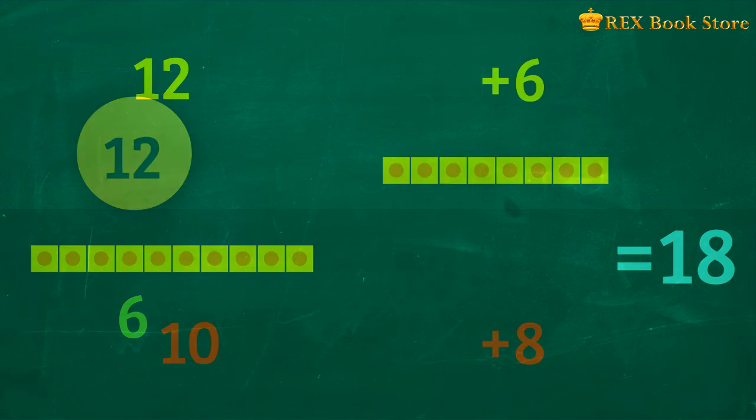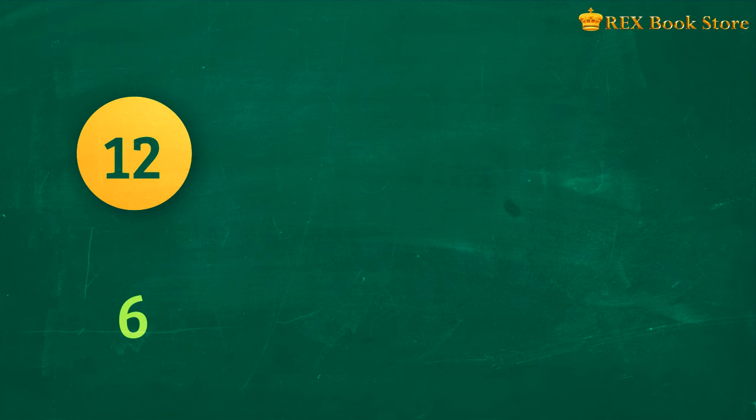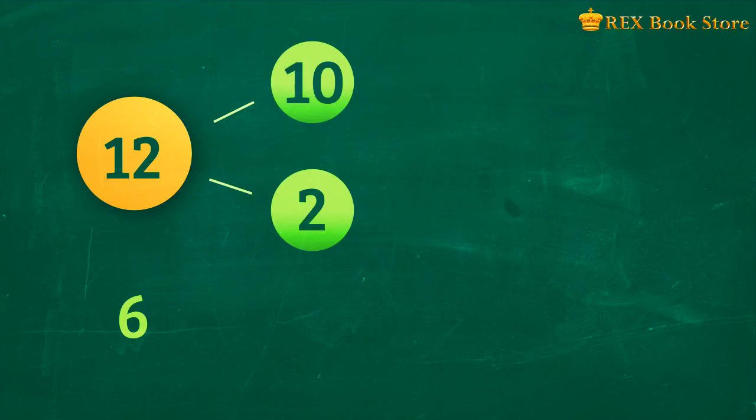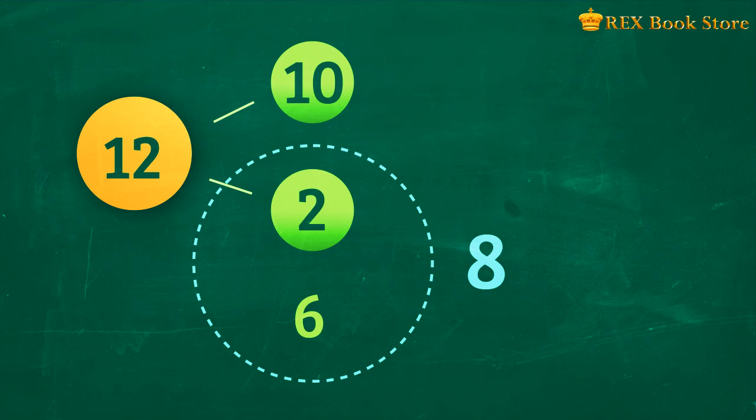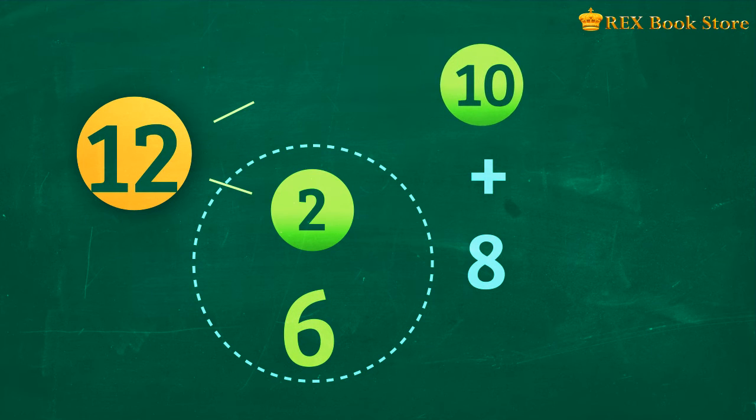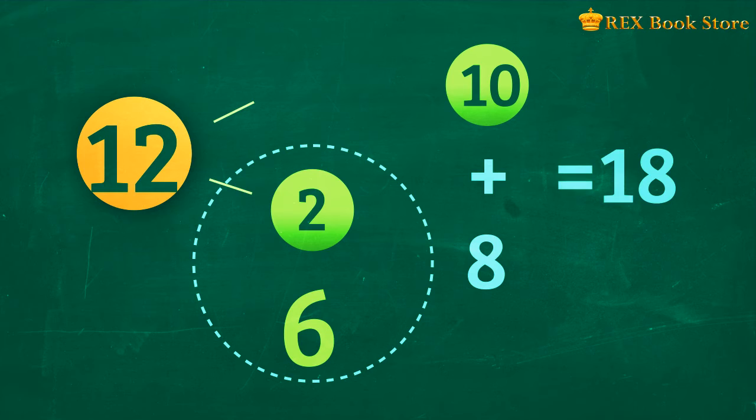By using number bonds, we can show the same. 12 can be shown in two parts, 10 and 2. If we combine 2 and 6, we get 8. So 12 plus 6 is equal to 10 plus 8. 10 plus 8 is equal to 18. And so, 12 plus 6 equals 18.